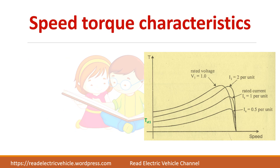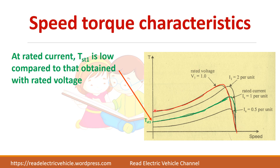Looking at the speed-torque characteristics, for the rated current shown in green, the starting torque is TS1. If we reduce the rated current to half its value, the torque is reduced. Also, at rated voltage, the starting torque is greater compared to when using stator current control.